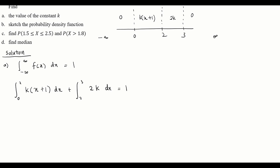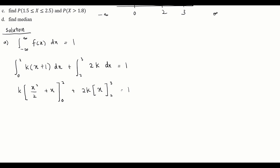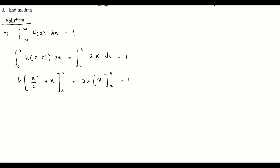Integrating: k is constant so we bring it outside, giving k[x²/2 + x] from 0 to 2, plus 2k[x] from 2 to 3, equals 1. Substituting the limits: the first part gives k(4/2 + 2) = 4k, and the second part gives 2k(3−2) = 2k.